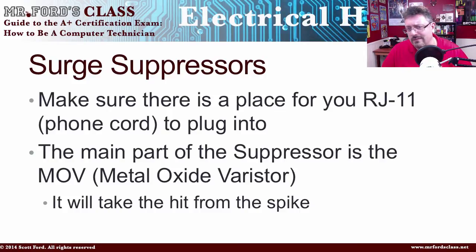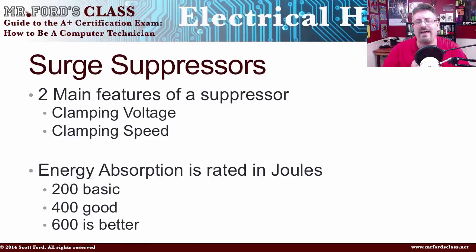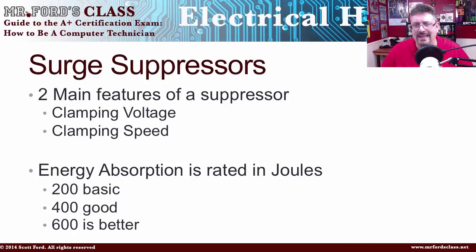Also, if you do get hit, you want to replace it. Many surge suppressors now have a light to tell you it's working — double-check that. The two main features of a suppressor are clamping voltage and clamping speed. The clamping voltage is the voltage level it has to reach before it kicks in and blocks the surge. Clamping speed is how fast it can kick in to protect the computer. Energy absorption is rated in joules: 200 joules is basic, 400 joules is good, 600 is fabulous. Anything over 600 should be just fine.